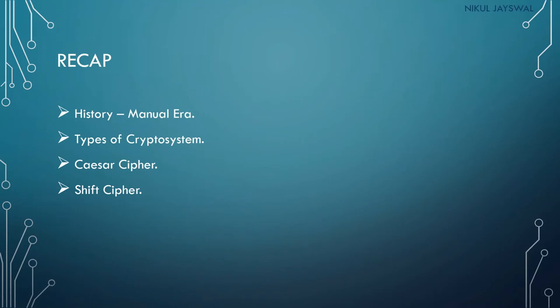Let's have a quick recap of our previous lecture. We covered the history of cryptography, including the Atbash and Scytale encryption methods. We also covered the types of crypto systems: substitution cipher, where we replace one letter with another, and transposition cipher, where we change the position of letters in the plain text.